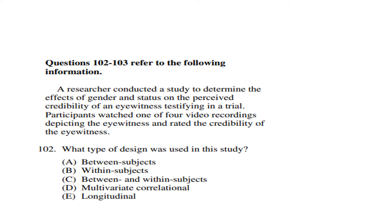Questions 102 to 103 refer to the following information: a researcher conducted a study to determine the effects of gender and status on the perceived credibility of an eyewitness testifying in a trial. Participants watched one of four video recordings depicting the eyewitness and rated the credibility of the eyewitness. Question 102: What type of design was used in this study? The right answer is within-subjects design.